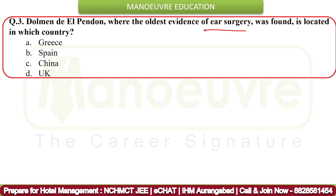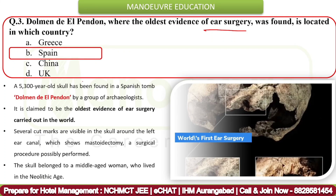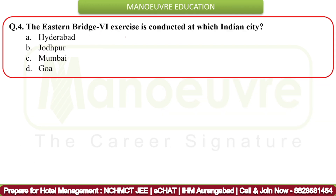Next question: Dolmen de El Pendón, where the oldest evidence of ear surgery was found, is located in which country? The correct answer is Spain. A 5,300-year-old skull was found in the Spanish tomb Dolmen de El Pendón by archaeologists. It is claimed to be the oldest evidence of ear surgery in the world. Several cut marks are visible around the left ear canal, showing a mastoidectomy — a surgical procedure. The skull belonged to a middle-aged woman who lived in the Neolithic age.